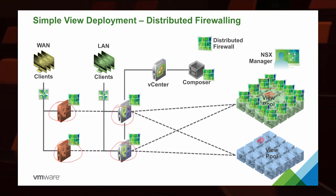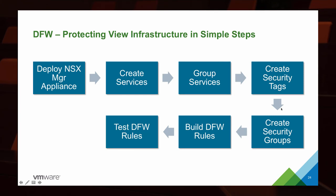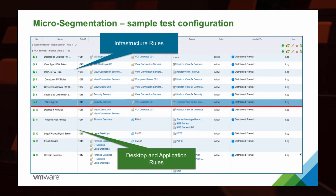Some quick steps to deploy a distributed firewall: you have the NSX manager appliance — just a VM — deployed first. You then create services, group them together to create a security tag and group for those services, then build a firewall rule to trigger based upon those services, and test your rules. A sample configuration for NSX firewall rules and VDI would have infrastructure rules at the top, and desktop and application rules beneath it — creating security groups and tags and applying those rules to them.